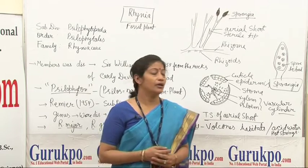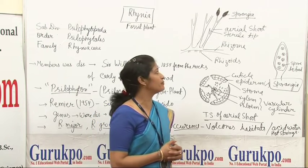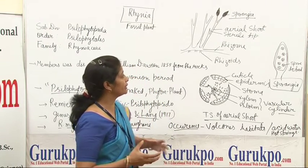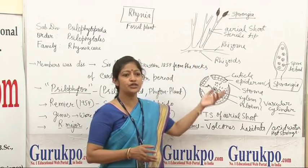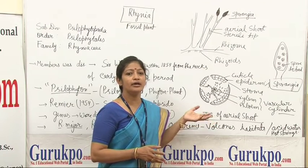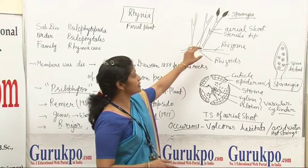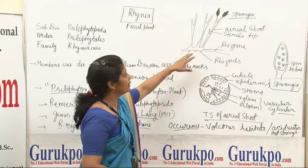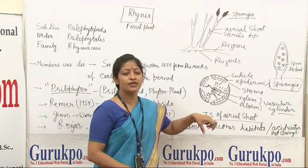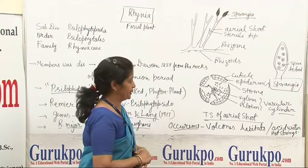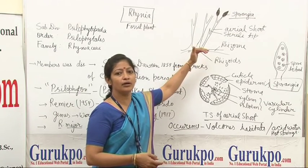It is a reconstructed plant because it is a fossil. If we see the morphology of this Rhynia plant, it was reported that it commonly consists of mainly two parts: one is called the aerial shoot and the next is called the rhizome, an underground stem. The aerial shoot is a very simple cylindrical structure, and at the tip of this, some spear-shaped sporangia were also reported.